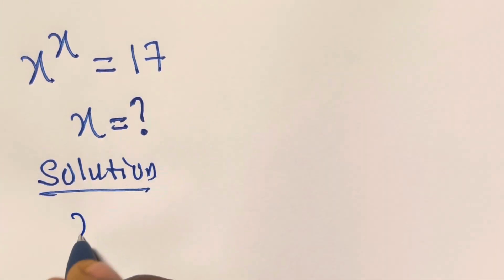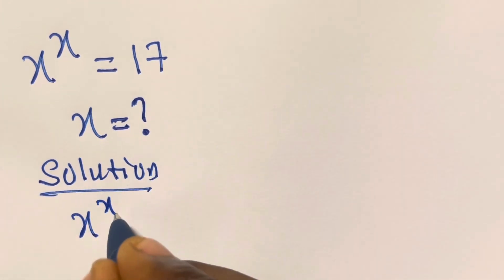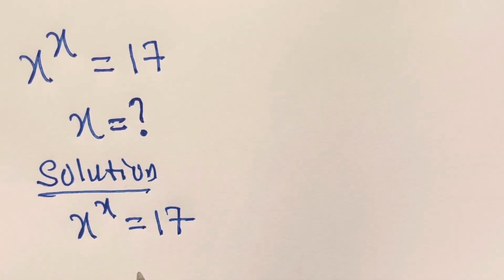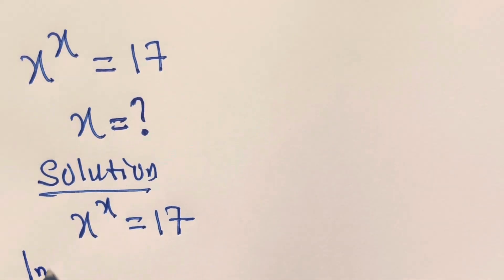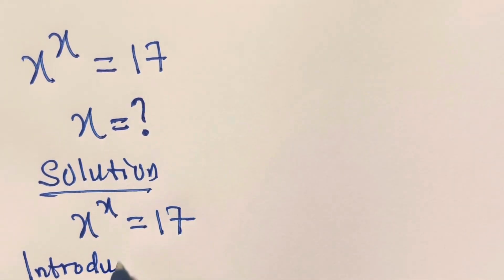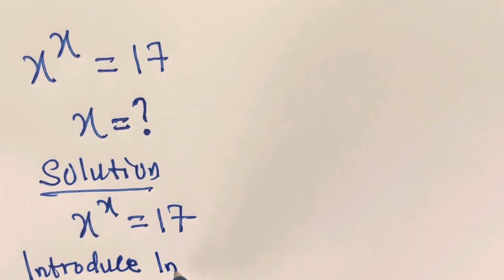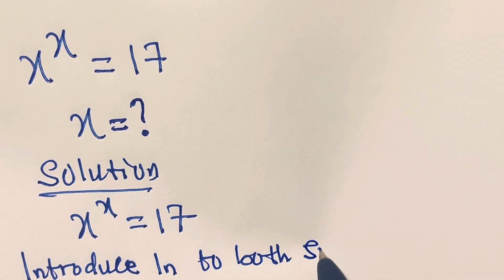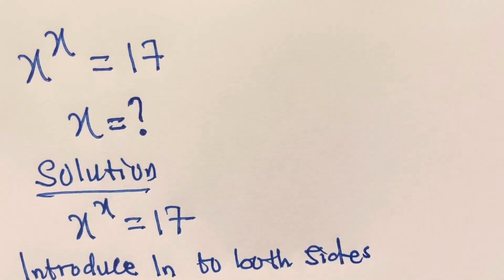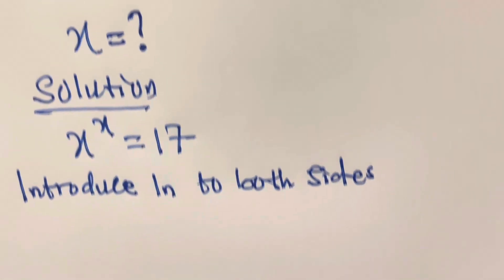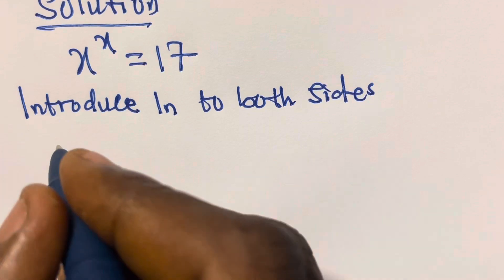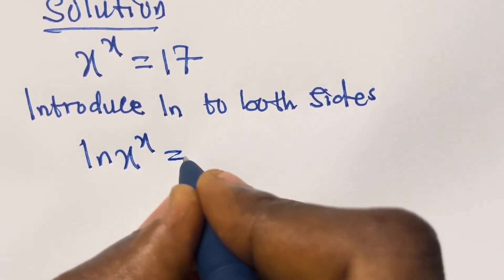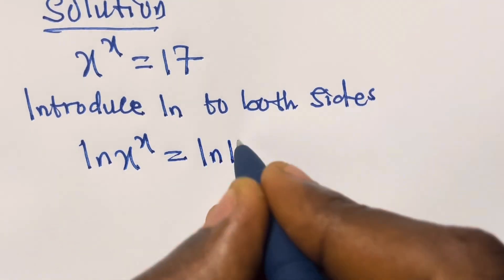We have x raised to the power x equals 17. From here, if we introduce ln to both sides, we are going to have ln of x raised to the power x equals ln 17.